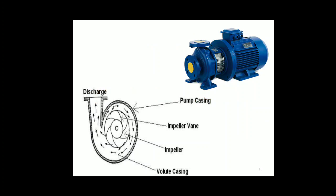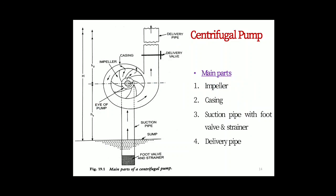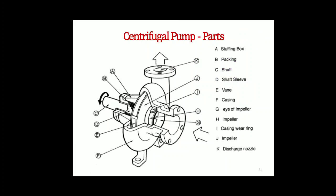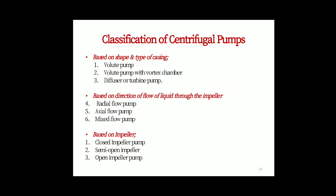Now this is the figure of the actual centrifugal pump. Let us see the different parts of a centrifugal pump. The main parts are: impeller, casing, suction pipe with foot valve and strainer, and delivery pipe. Now let us see how this works.